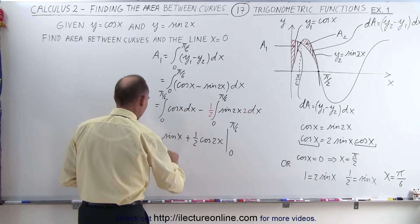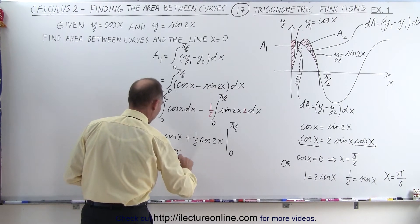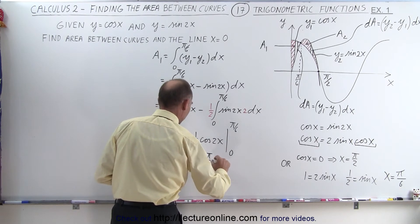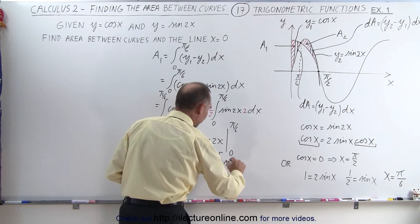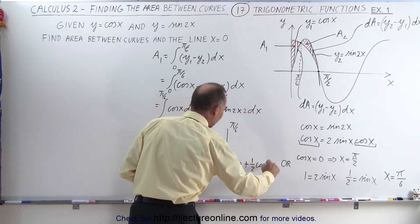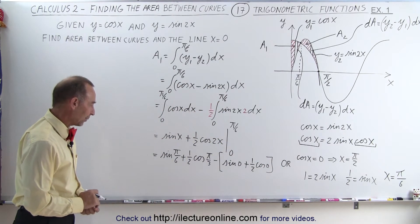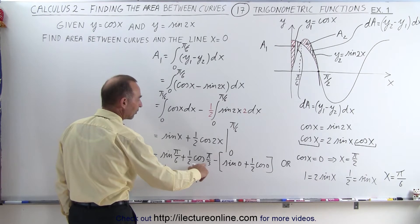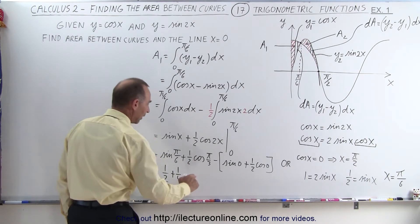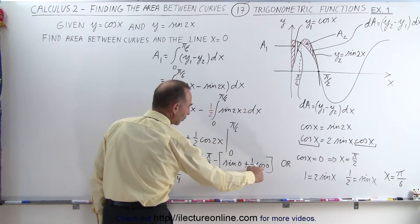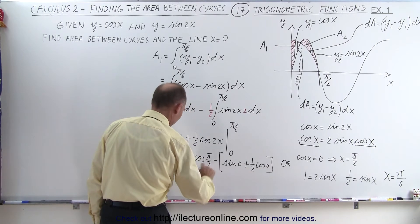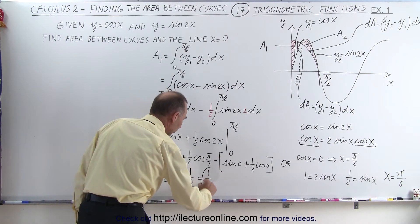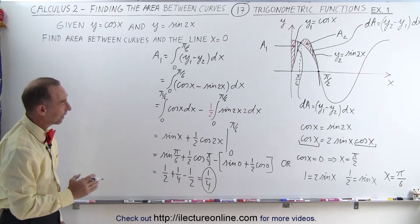Plugging in the upper limit: sine of pi over 6 plus one half times cosine of pi over 3. Subtracting the lower limit: sine of 0 plus one half times cosine of 0. Sine of pi over 6 is one half; cosine of 60 degrees is one half, times one half gives one quarter. Sine of 0 is 0; cosine of 0 is 1, times one half is one half. So we get one half plus one quarter minus one half, and the one halves cancel, giving A1 equals one quarter.